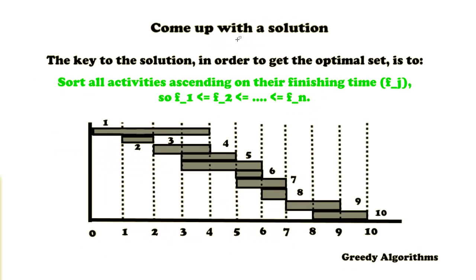The key to the solution is to sort all activities ascending on their finishing time. So what we're going to do within this algorithm is go through all the activities. We're going to first sort them on their finishing time, and they should of course be compatible.